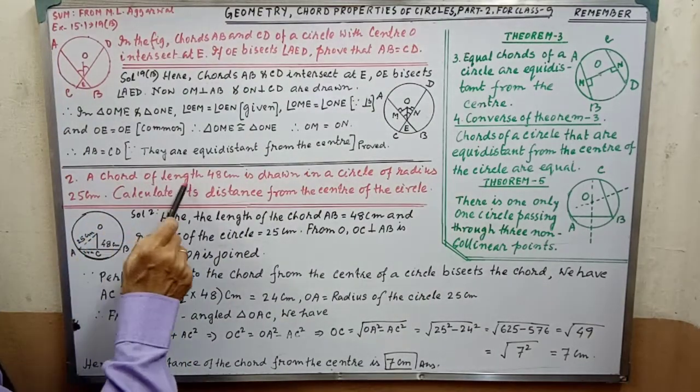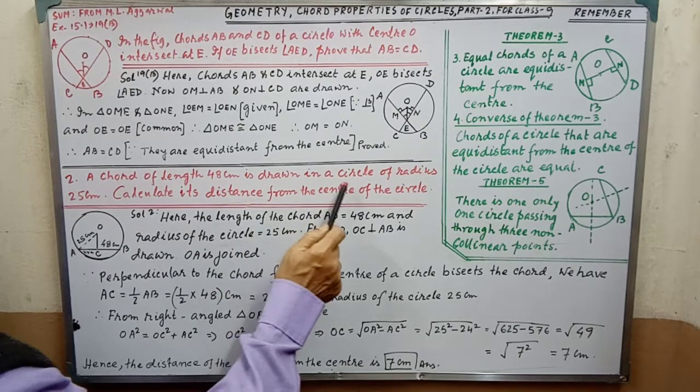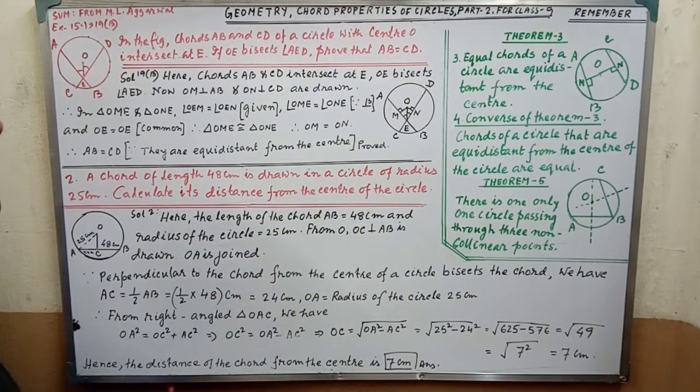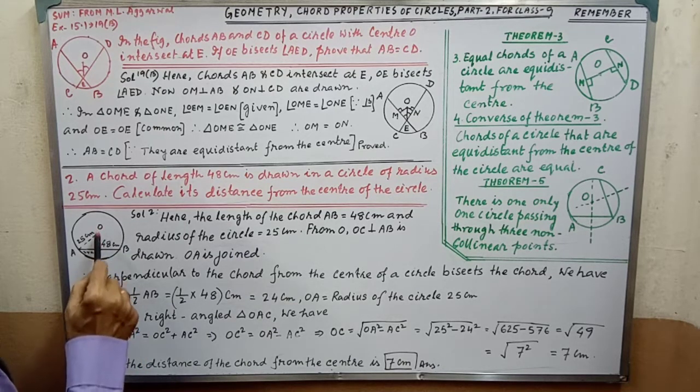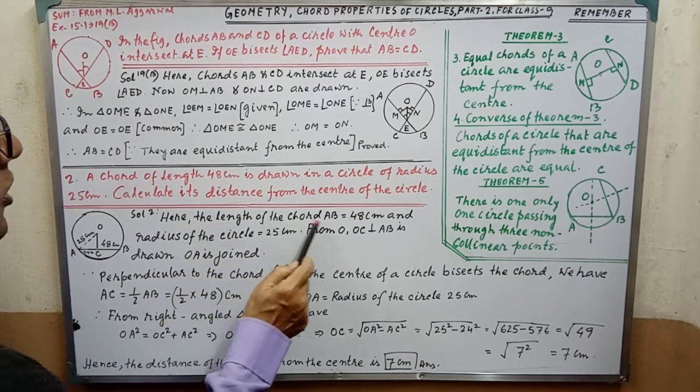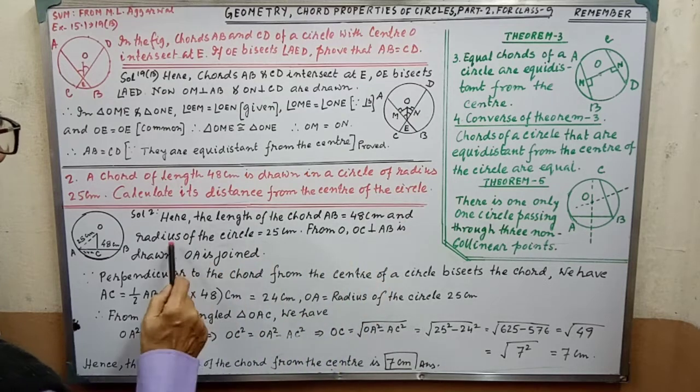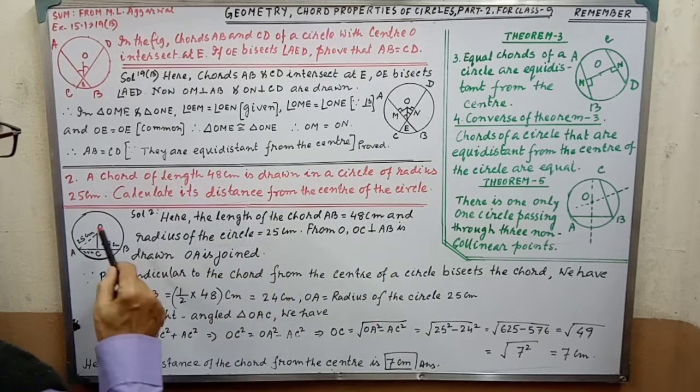Next sum. A chord of length 48 cm is drawn in a circle of radius 25 cm. Calculate its distance from the center. This distance OC, this distance we have to find out. Solution: Here the length of the chord AB equal to 48 cm given, and radius of the circle equal to 25 cm.